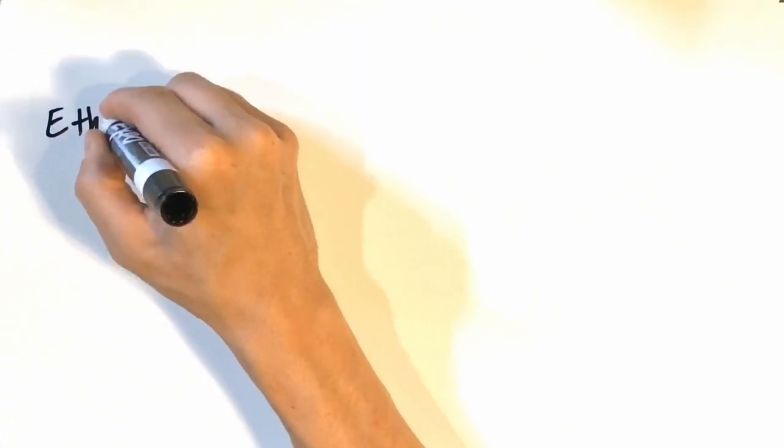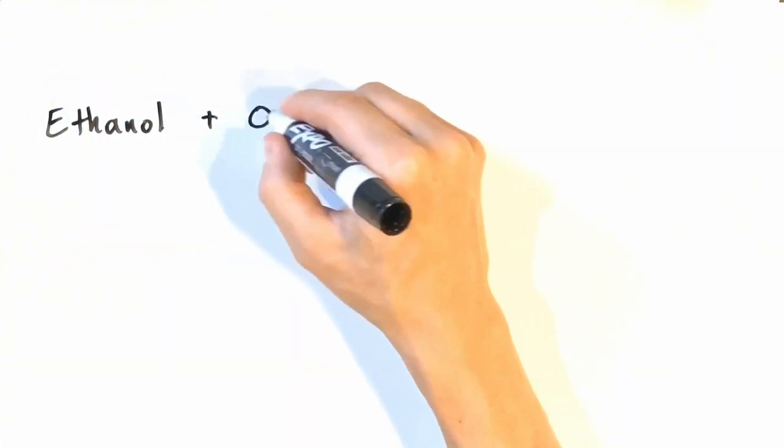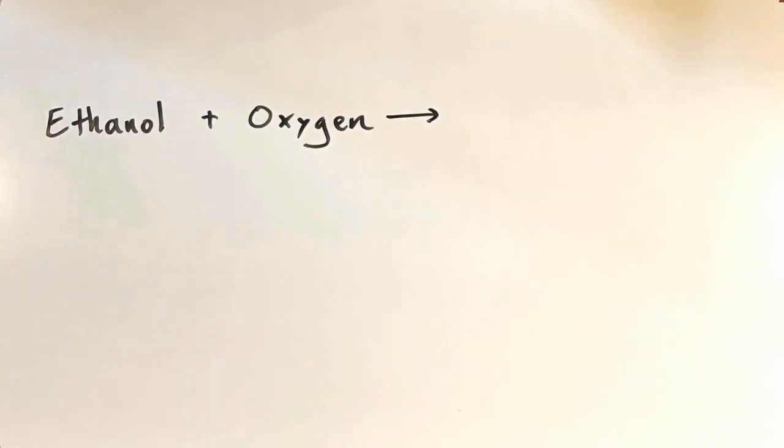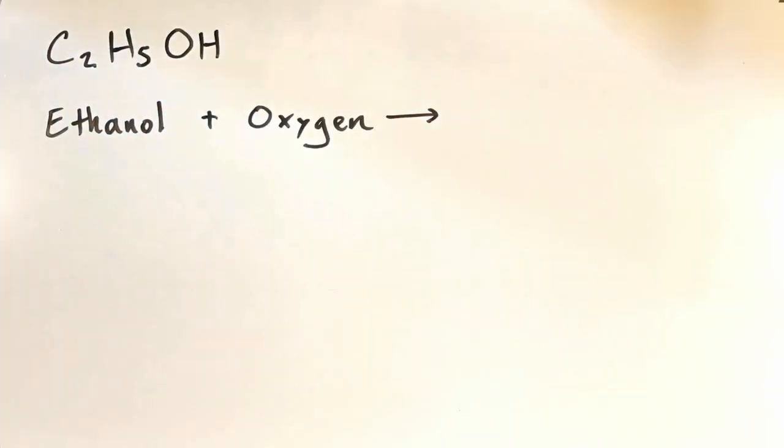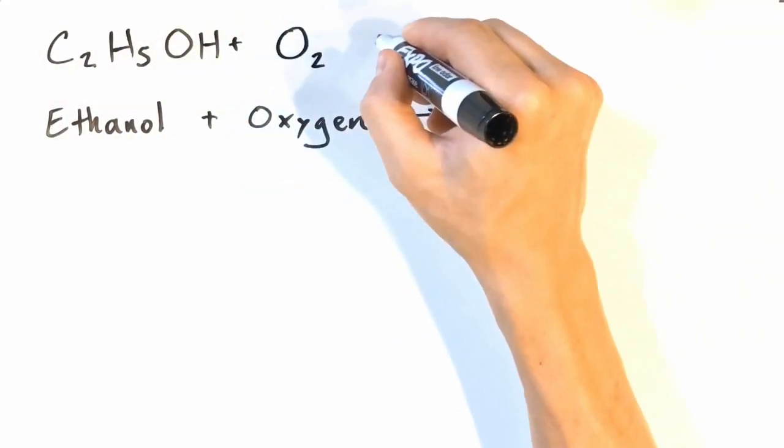As we did with soda fizzing, let's start off with just writing the chemical reaction in words like this. Here we see only the reactants. Let's also write out the molecular formulas so we can see which atoms are present in each molecule. Here's the molecular formula for ethanol, and here it is for oxygen.